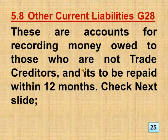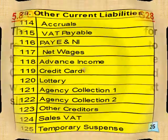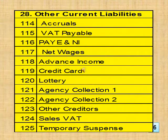Section 5.8 Other Current Liabilities, Group 28. These are accounts for recording money owed to those who are not trade creditors, and it's to be repaid within 12 months. The accounts in this group are: Accruals, VAT Payable, Pay and NI, Net Wages, Advance Income, Credit Card, Lottery, Agency Collection 1, Agency Collection 2, Other Creditors, Sales VAT, and Temporary Suspense.